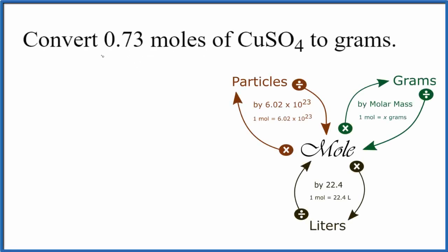In this video, we'll convert 0.73 moles of copper 2 sulfate (CuSO4) to grams. This 0.73 number is just a number I made up for the video. So we have 0.73 moles of copper 2 sulfate and we want to go from moles to grams.